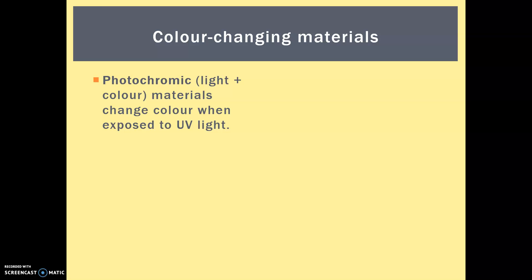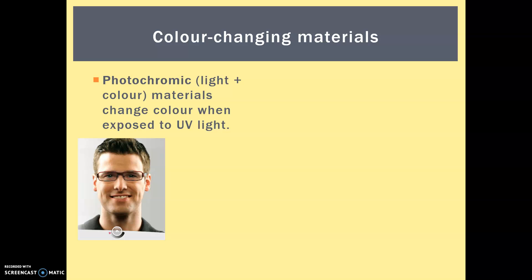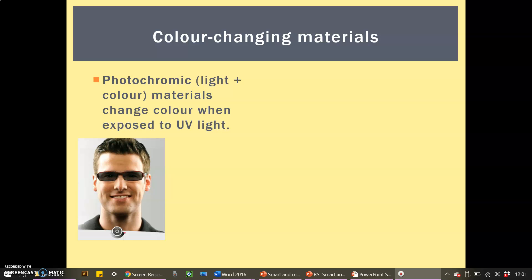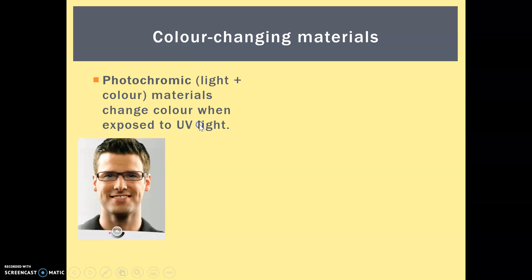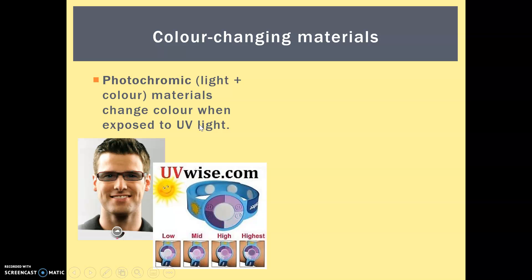Photochromic pigments — that means the combination of light and colour: photo means light, chromic means colour. So photochromic materials change colour when exposed to UV light, specifically UV light. They are currently used in colour-changing or tonal-changing glasses — lenses which you or your friends may actually have. They are also used in bands which can be given to children so that parents know if they have been exposed to too much UV damage and need to reapply their sunscreen.